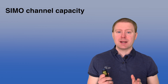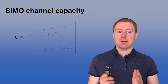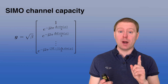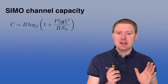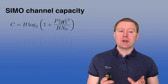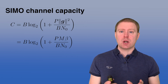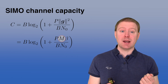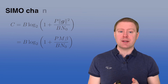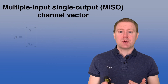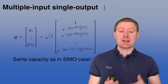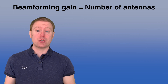The important thing is that the channel vector g has a common gain beta and all elements have magnitude one, so the squared norm of g gives M times beta. This means the SNR becomes proportional to the number of antennas — a beamforming gain. For the MISO channel, transmitting from the array to a single receiver, we can use the same g vector and obtain the same capacity, again achieving a beamforming gain proportional to M.